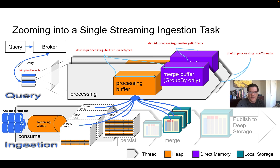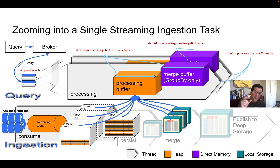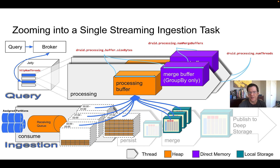Another set of buffers used specifically for group-by queries are the merge buffers. These are a shared resource outside the processing threads. The number of merge buffers available within a task is usually two — the minimum required to process group-by queries with nested group-by logic. Each such query needs two buffers, so if you only have two, you can only process one nested group-by at a time. If you need more concurrency for group-by queries, one option is to increase the number of merge buffers in the task configuration.